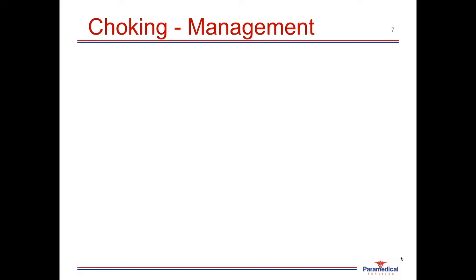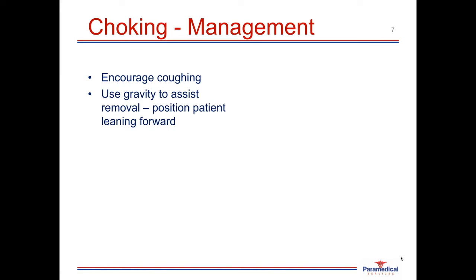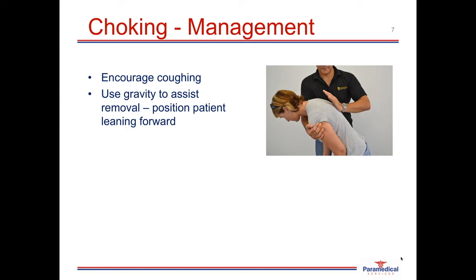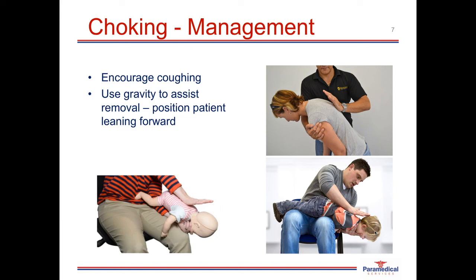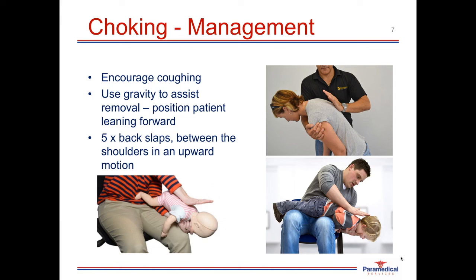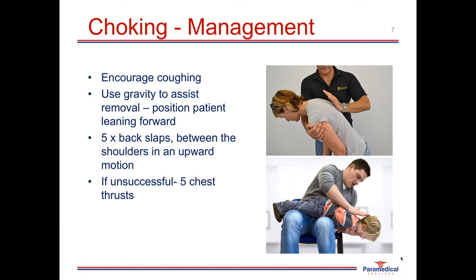When managing a choking patient who has a good level of consciousness, encourage them to cough and use gravity to assist removal of the object. Position the patient leaning forward, or for small children and infants, support the child over your legs with the jaw area held and the head tilted downward. Administer five back slaps between the shoulders in an upward motion using the heel of the hand. If unsuccessful, try five chest thrusts. If the casualty becomes unconscious, start CPR immediately and follow your DRS-ABCD routine.